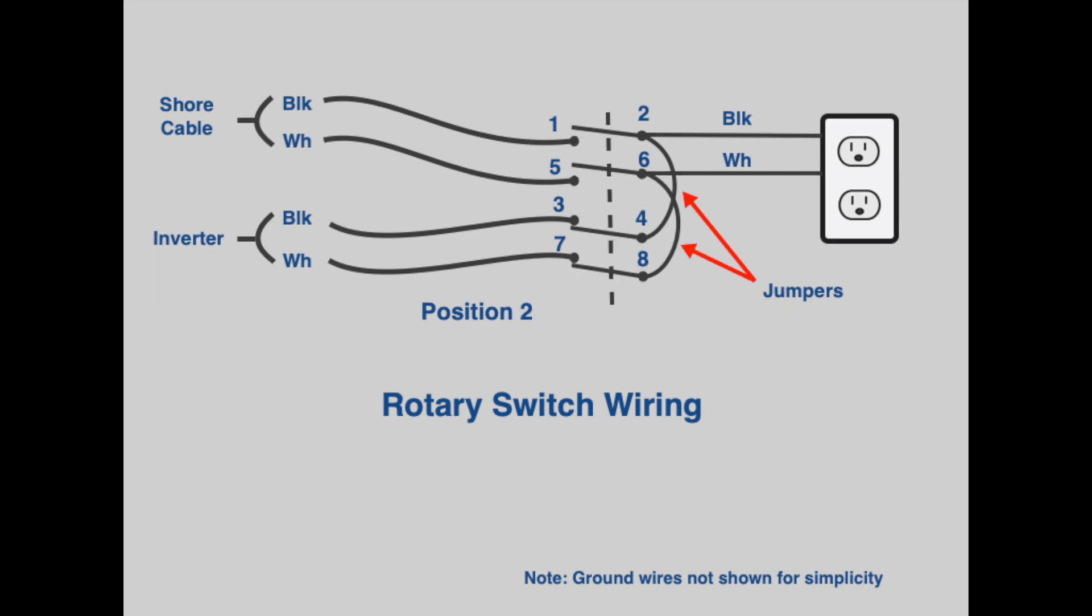When we turn the switch to position two, the shore power conductors are disconnected. The black wire from the inverter is connected to terminal three, through the switch to terminal four, then along the jumper to terminal two, and onto the house hot wire. Likewise, the inverter white conductor connects to terminal seven, through the switch to terminal eight, along the jumper to terminal six, and onto the house circuit.